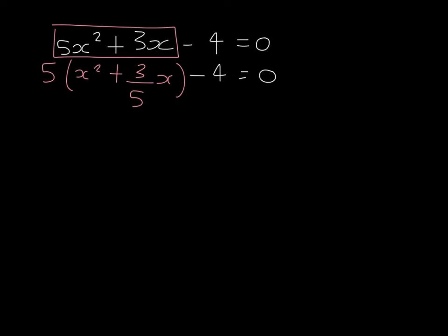Then completing the square, we'll leave this 5 out at the front. In the brackets here we'll have x plus, now we need to halve 3 fifths which gives us 3 tenths squared. Now when we expand this bracket, this will result in 3 tenths multiplied by 3 tenths which is 9 over 100.